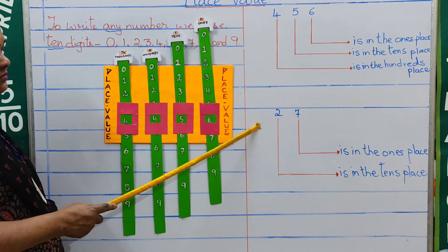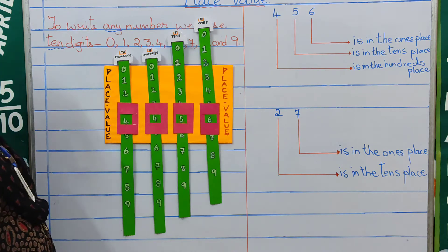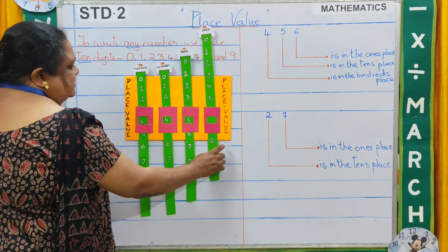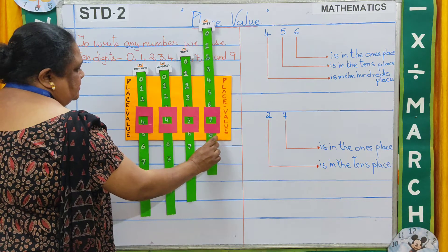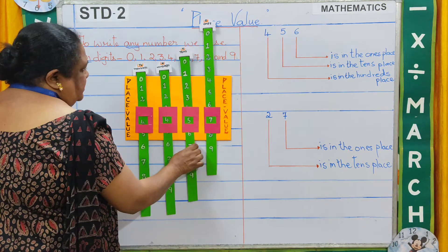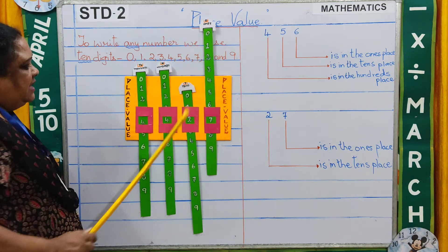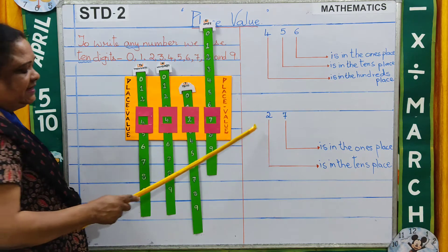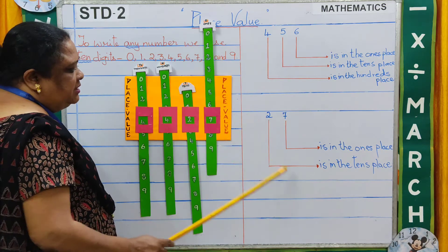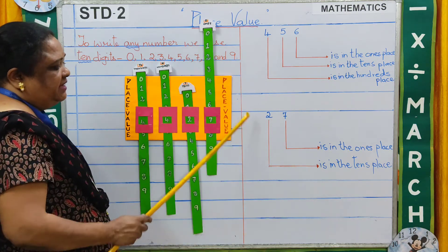Coming to the next figure, we have 27 here. Now let us do 27 on the place value chart. 7 is in the ones place and 2 is in the tens place. So that is 7 ones and 2 tens, giving us 27.